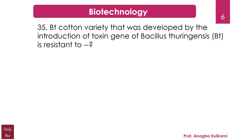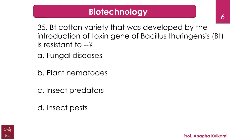The next question relates to the chapter Biotechnology. The question is: BT cotton variety developed by the introduction of the toxin gene of Bacillus thuringiensis is resistant to — options: A) fungal diseases, B) plant nematodes, C) insect predators, D) insect pests. The correct answer is D — insect pests.